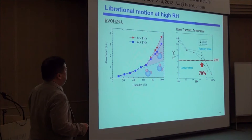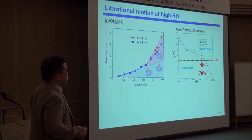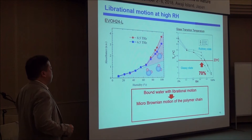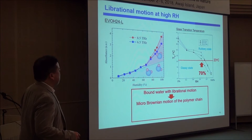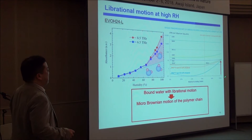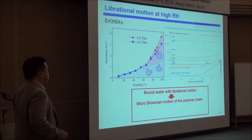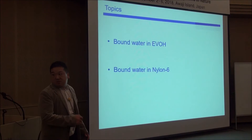By adding water, the water helps to change the polymer chain from a glassy state to a rubbery state. We can compare the bound water with librational vibrational motion, which is much more like liquid water. This allows us to go back to the first question: why does oxygen transmission increase at higher humidity? It is because water helps to increase polymer chain mobility.